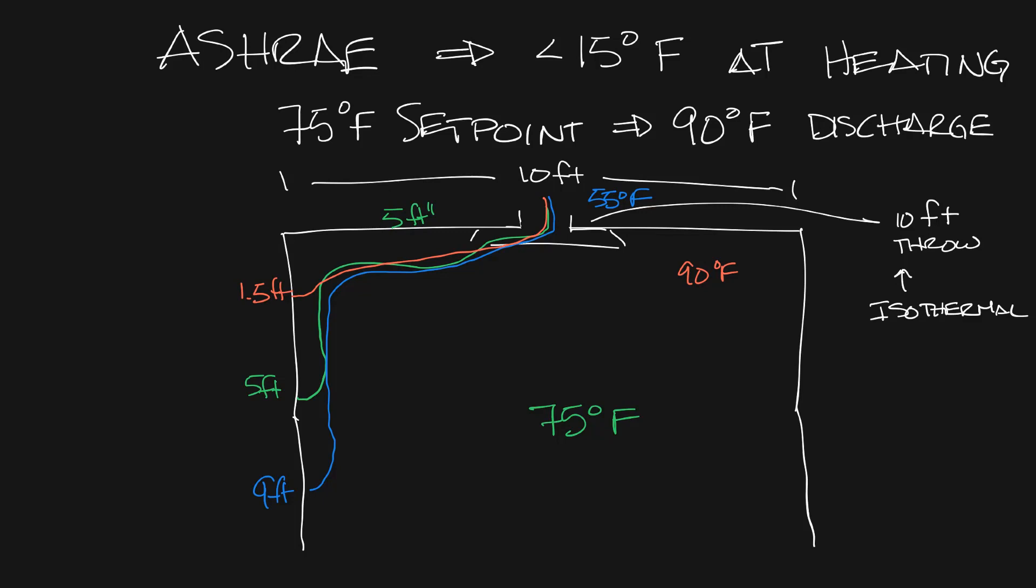Now let's go up 30 degree delta T, so now we're looking at 105 degrees supply air and now the throw is only five feet so it's really just going to come out and go to the corner.